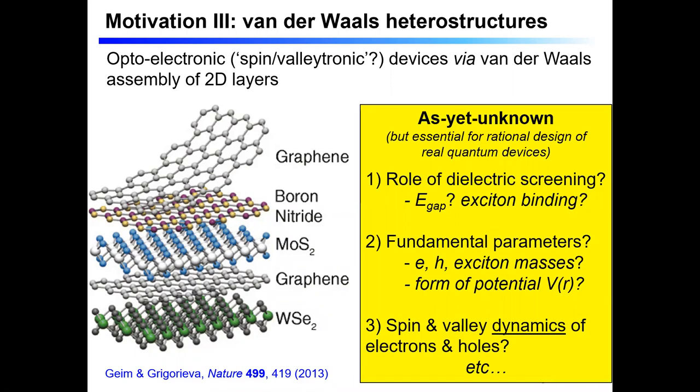There are a lot of things we don't yet know or haven't experimentally measured that are really going to be essential ingredients for any future rational design of real quantum devices based on these 2D materials. For example, what is the role of dielectric screening? It really matters a lot what goes above and below any one of these monolayer semiconductors — it has a huge impact on the free particle gap and on the binding energies of excitons. Even very fundamental parameters like electron mass, hole mass, and exciton mass are still being pulled from DFT theory, with very few experimental measurements.